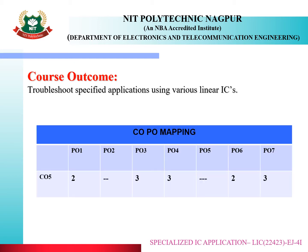Here, the chart shows CO and PO mapping. CO 5 is getting mapped with PO 1, 3, 4, 6, and 7. How this CO gets mapped with all these POs, we have already discussed in the last lecture.